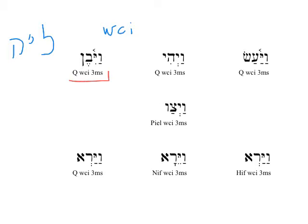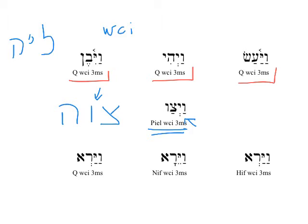In the case of bana, we have vayyiven, 'and he built.' In the case of haya, we have vayyehi, 'and it was.' In the case of asah, we have vayyaas, 'and he did' or 'and he made.' The piel is going to have exactly the same kind of construction — we can see it's a piel because it has the shva under the prefix pronoun, just as we would expect. So the word for 'to command,' from tsade, vav, he, has the vav always with a consonantal character. We have vaytsav, 'and he commanded' — very characteristic of the piel in the vav-consecutive imperfect for lamed-he verbs.